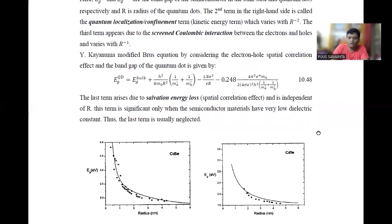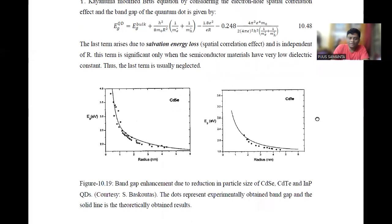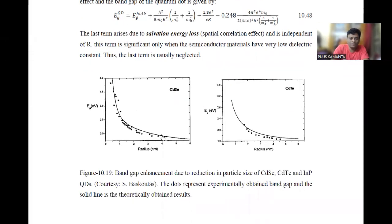If we look at the experimental data, here we have represented two size-dependent band gaps: one for cadmium selenium and one for cadmium telluride. If the particle size is reduced from 6 nanometers to 1 nanometer, you can see the band gap changed from 1.8 to about 2.75 in case of cadmium selenium.